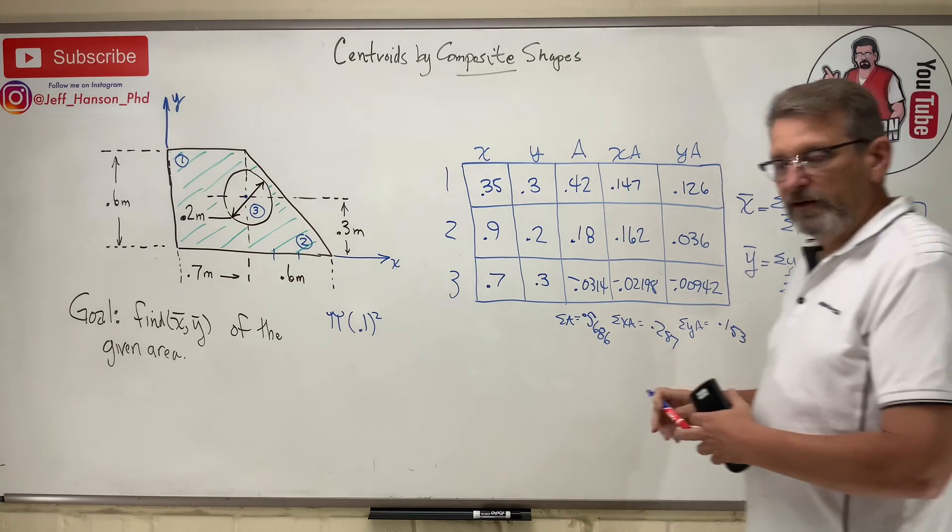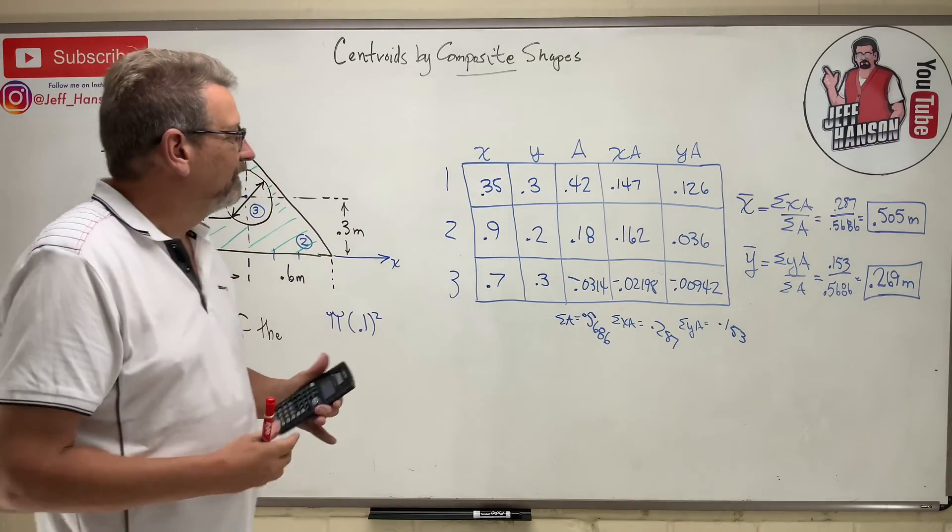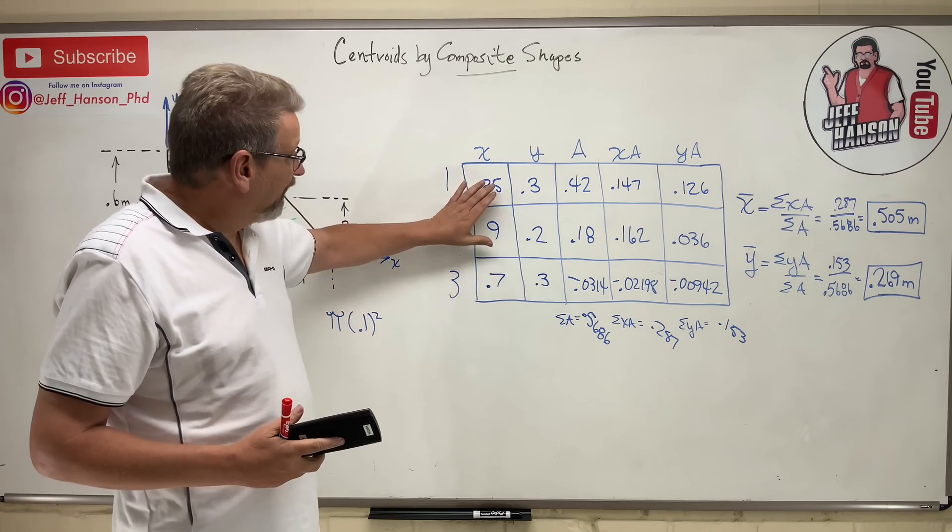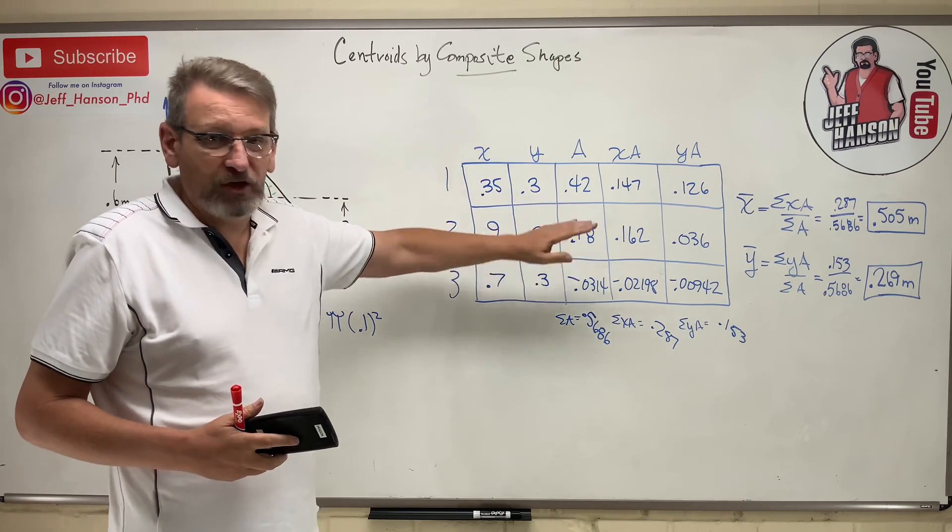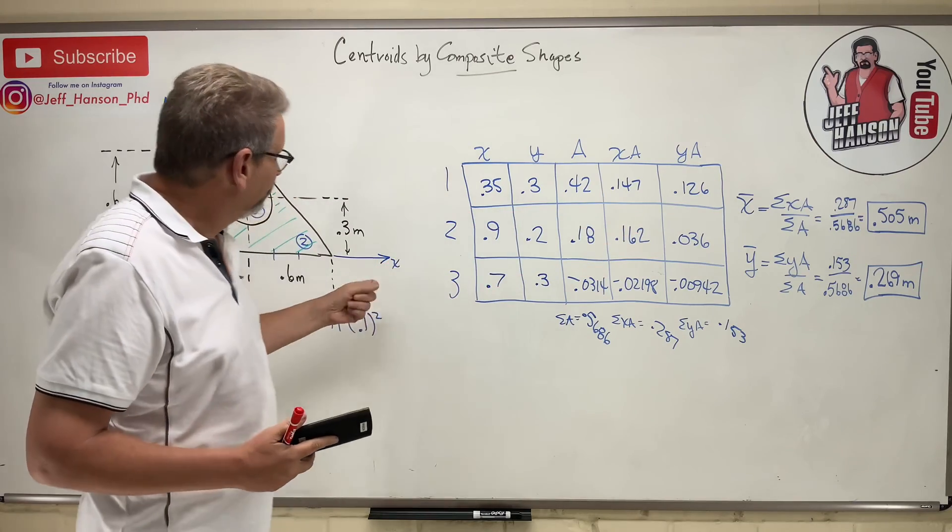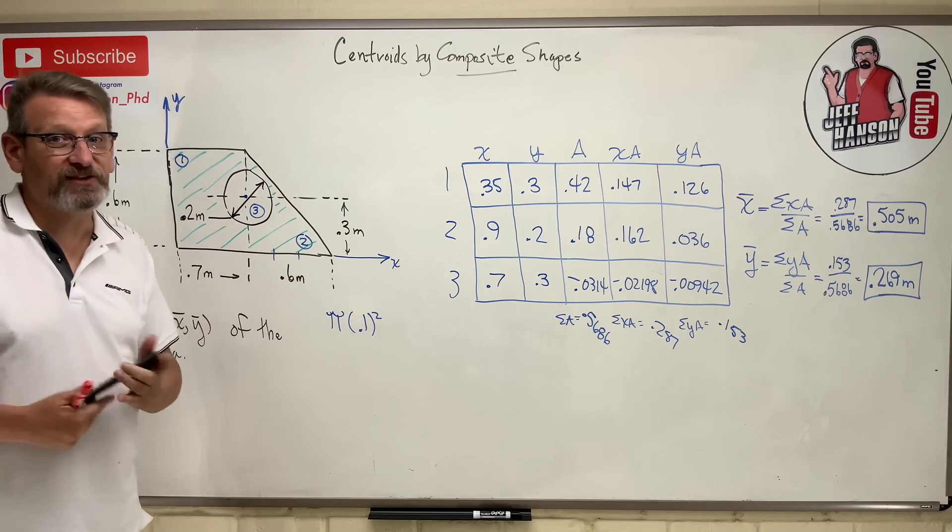So I think these are really nice when you just make these little tables. You got to be super careful about every single little thing you put in your table, because one mistake and then your answer is wrong. So hope that helps. That's the method of composite shapes. See you next time.